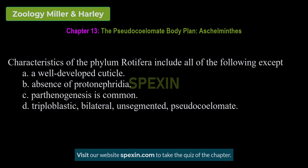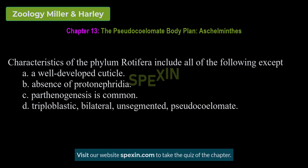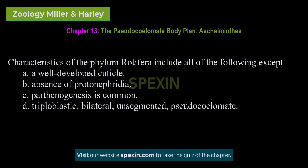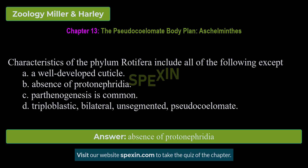Characteristics of the phylum Rotifera include all of the following except: A. A well-developed cuticle. B. Absence of protonephridia. C. Parthenogenesis is common. D. Triploblastic, bilateral, unsegmented, pseudocoelomate. Correct answer: Absence of protonephridia.